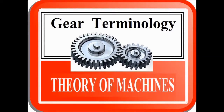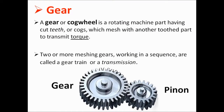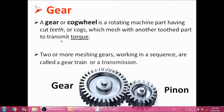First, we define the gear. A gear or cogwheel is a rotating machine part having cut teeth or cogs which mesh with another toothed part to transmit torque. It is a wheel with teeth used to transmit power at smaller distances. Two or more gears working in a sequence are called a gear train or transmission.